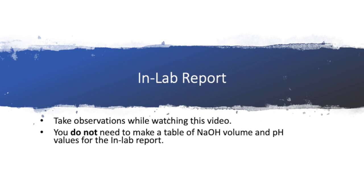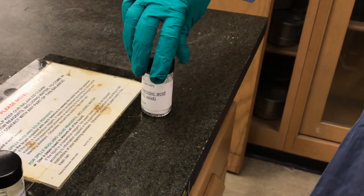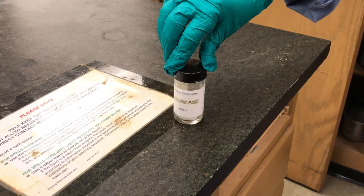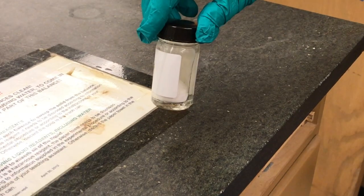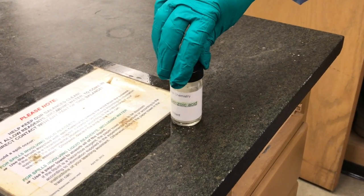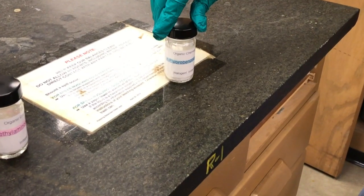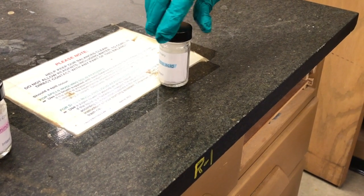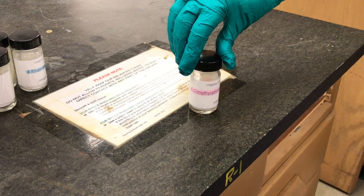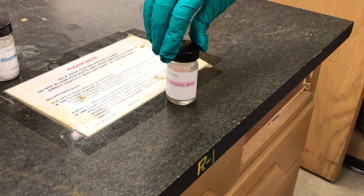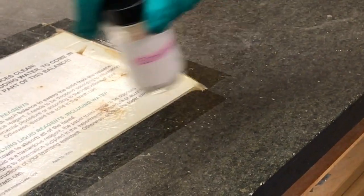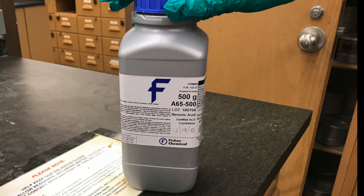Just a quick reminder that when you're watching this video, please make sure to take observations down. Usually we would have you record a table of sodium hydroxide volumes added, but for this experiment that's not going to be required. Now we're going to show you what the different carboxylic acids look like so you can get a sense of what they are. Here's nicotinic acid, 4-nitrobenzoic acid, 4-fluorobenzoic acid, and 4-dimethylaminobenzoic acid. For this lab demonstration we're only going to show one of them, and it's going to be benzoic acid.